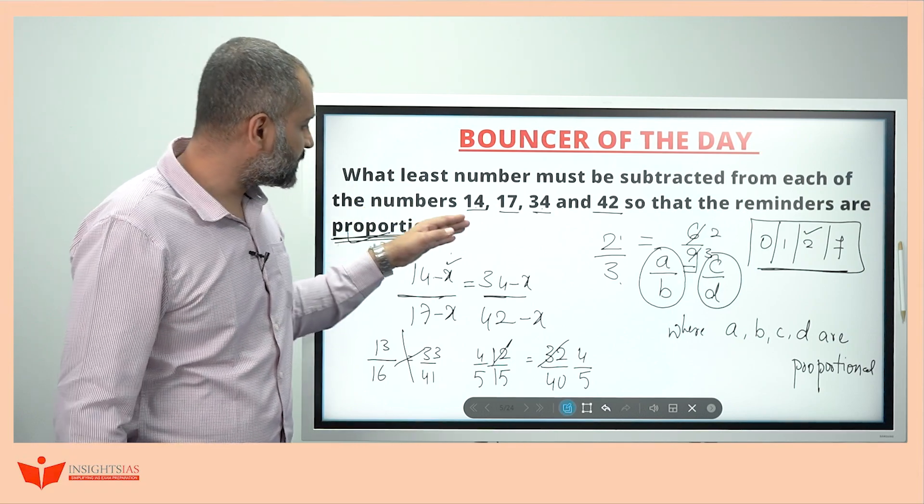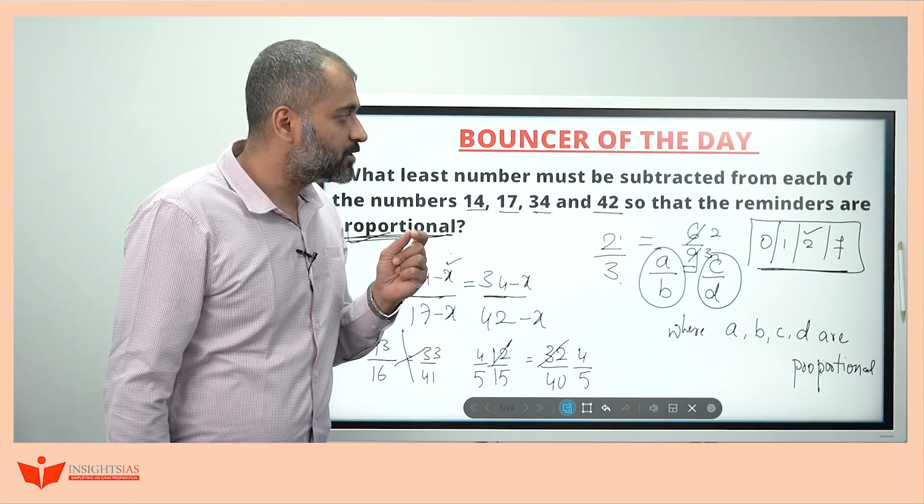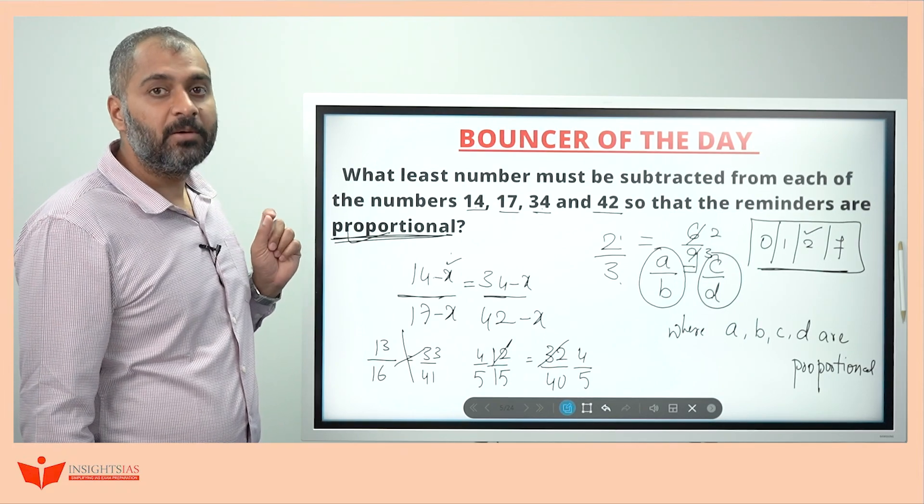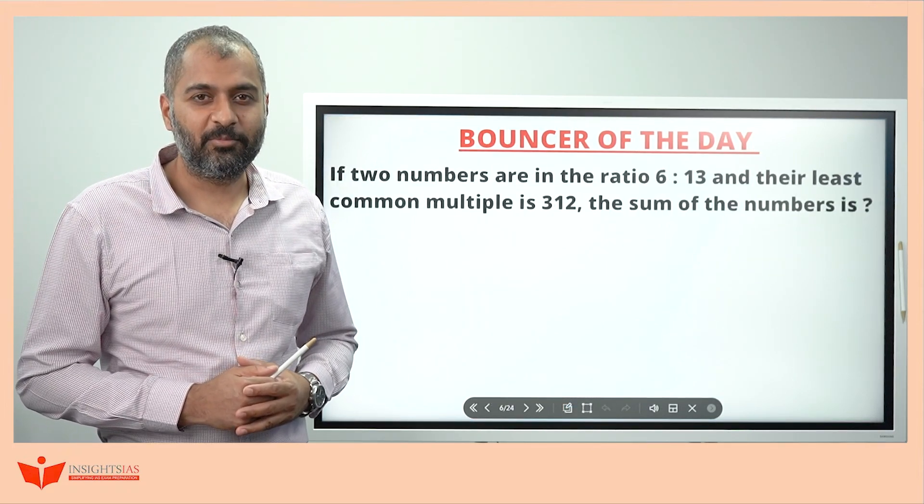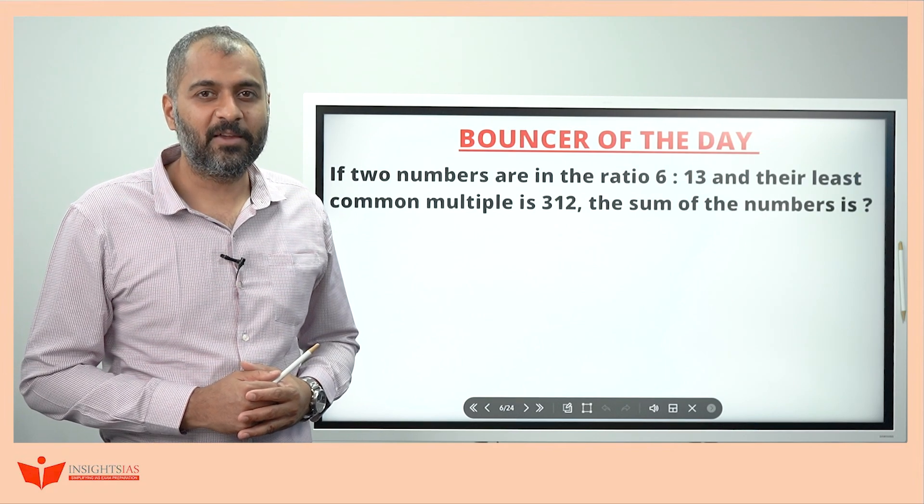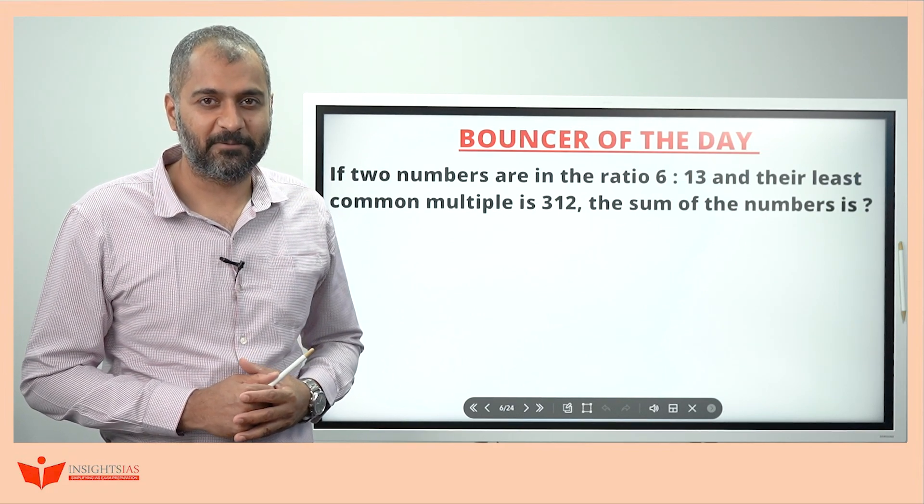So what must be subtracted from each of these? 2 must be subtracted from each of these. Then the remainders will be proportional. This is the bouncer of the day. Try to solve this question and put the answers in the comment section guys. Thank you. Keep watching the video. We will see you in the next video.